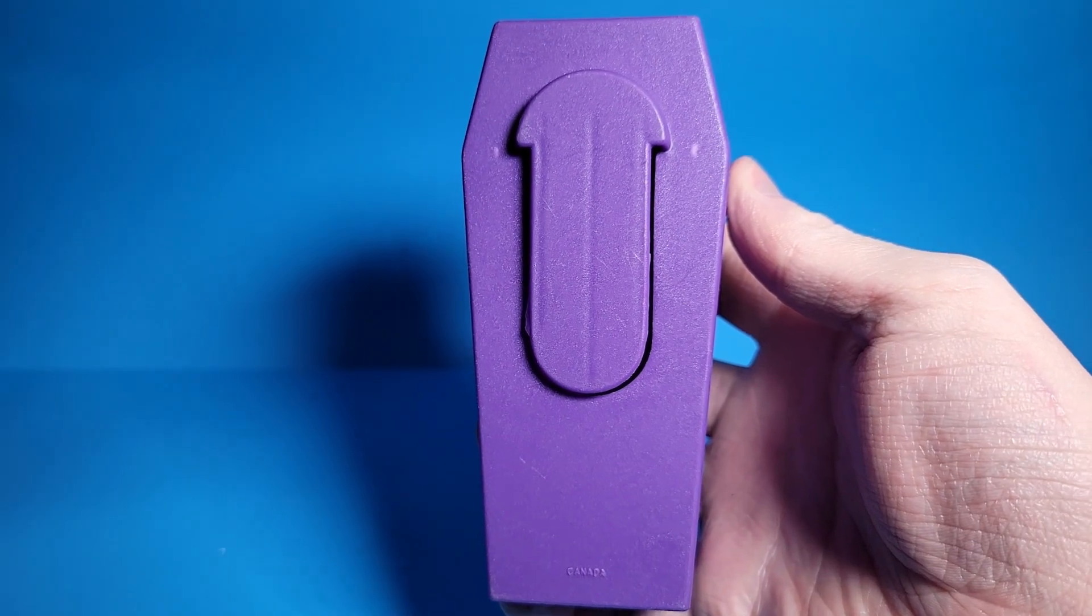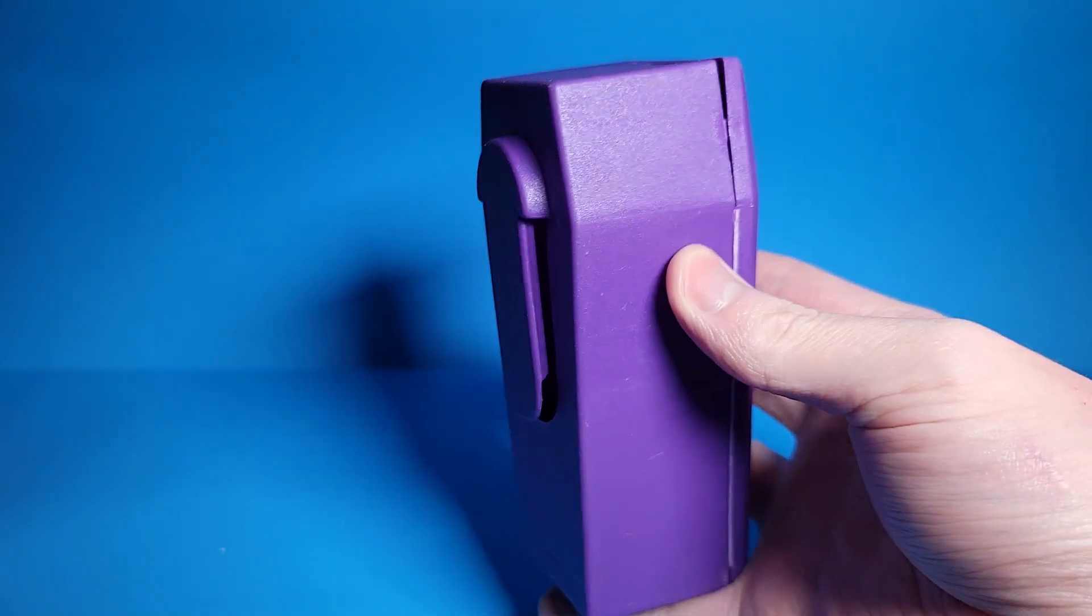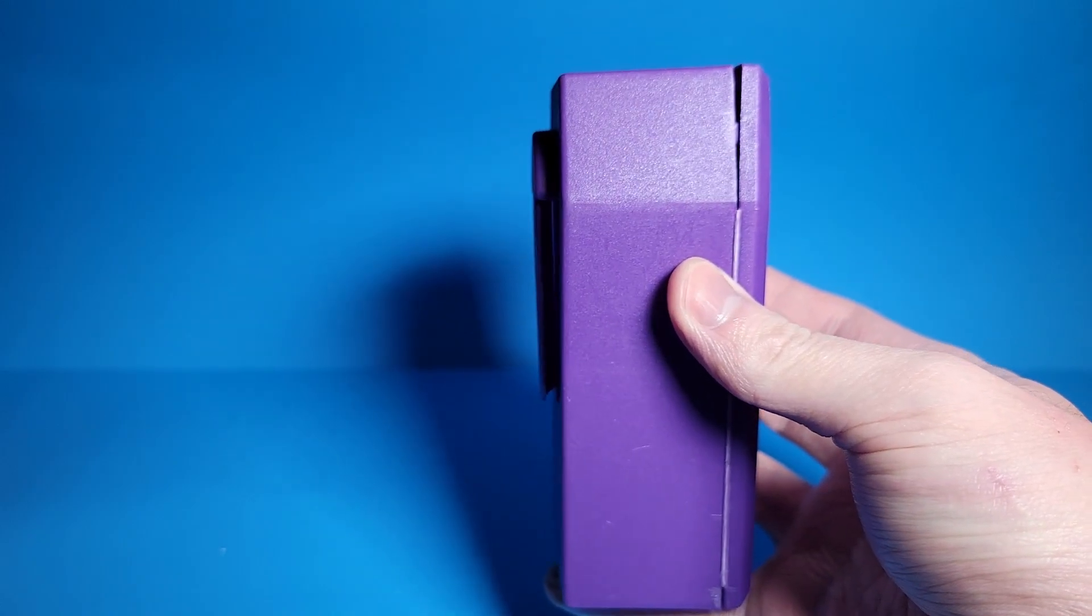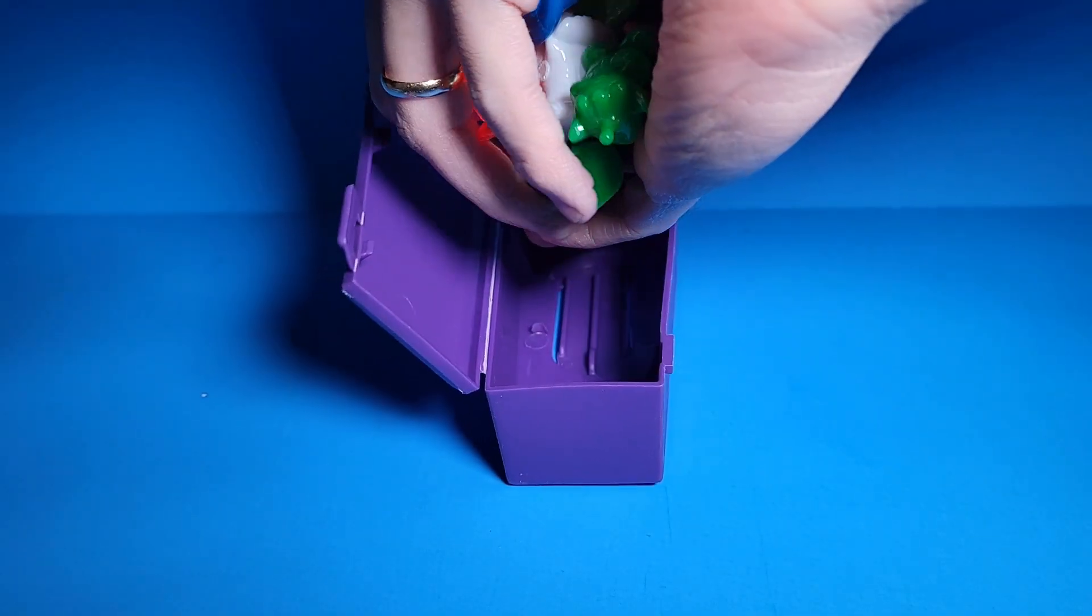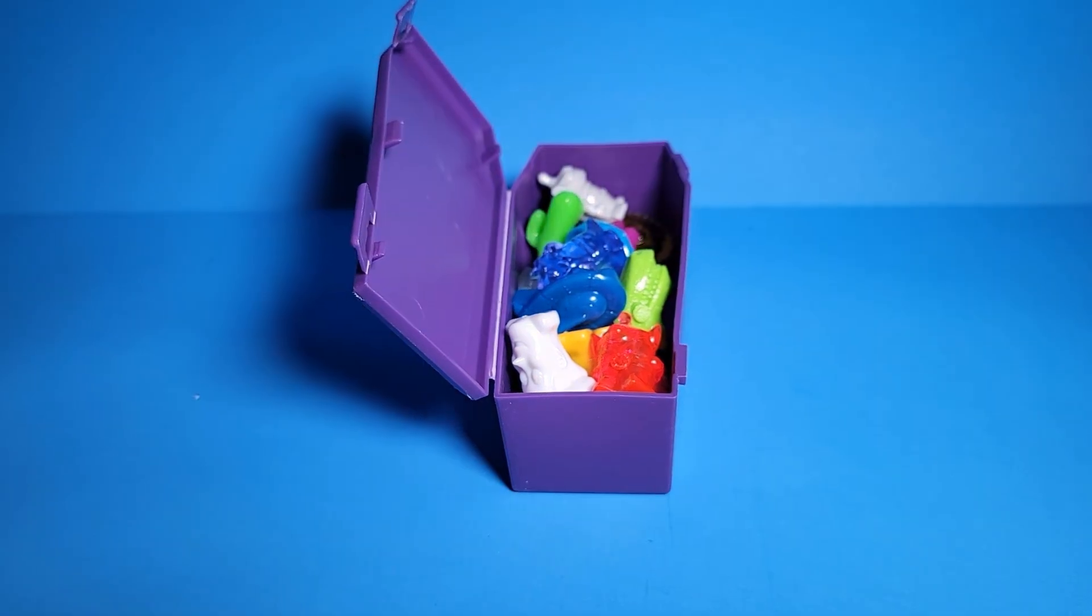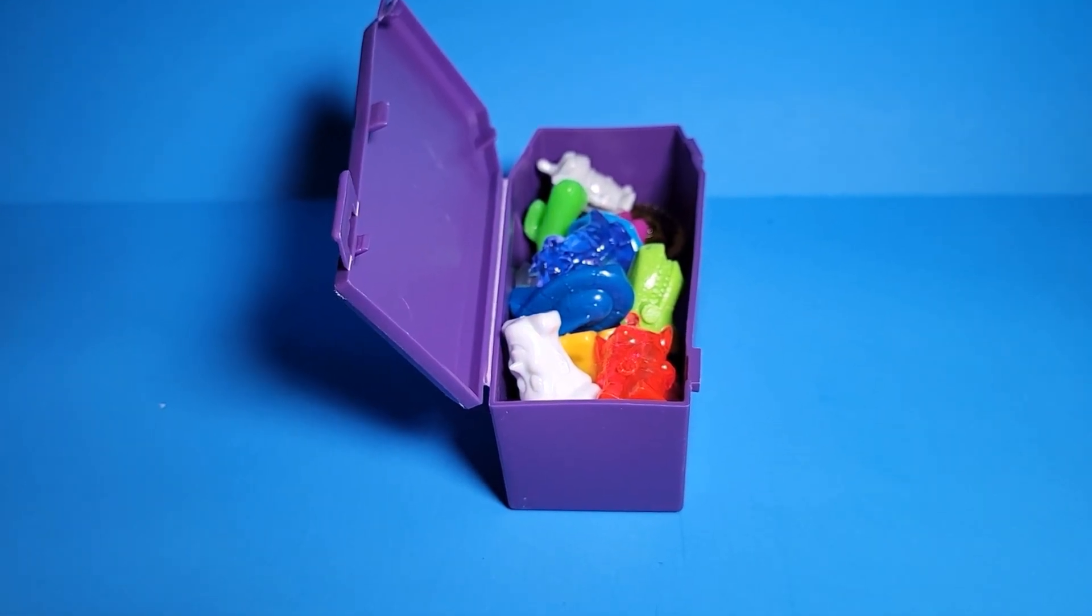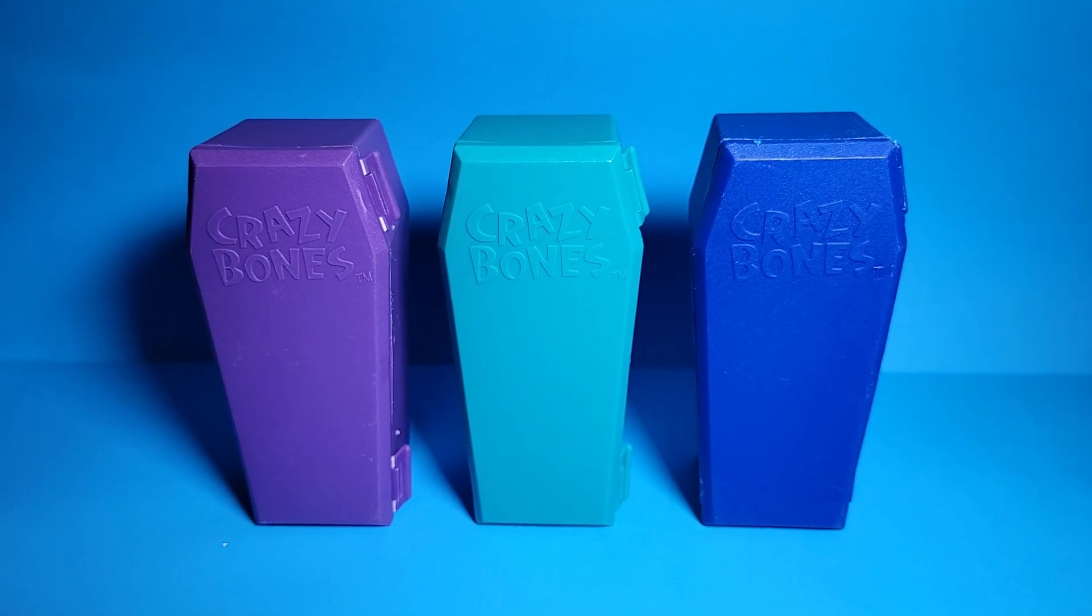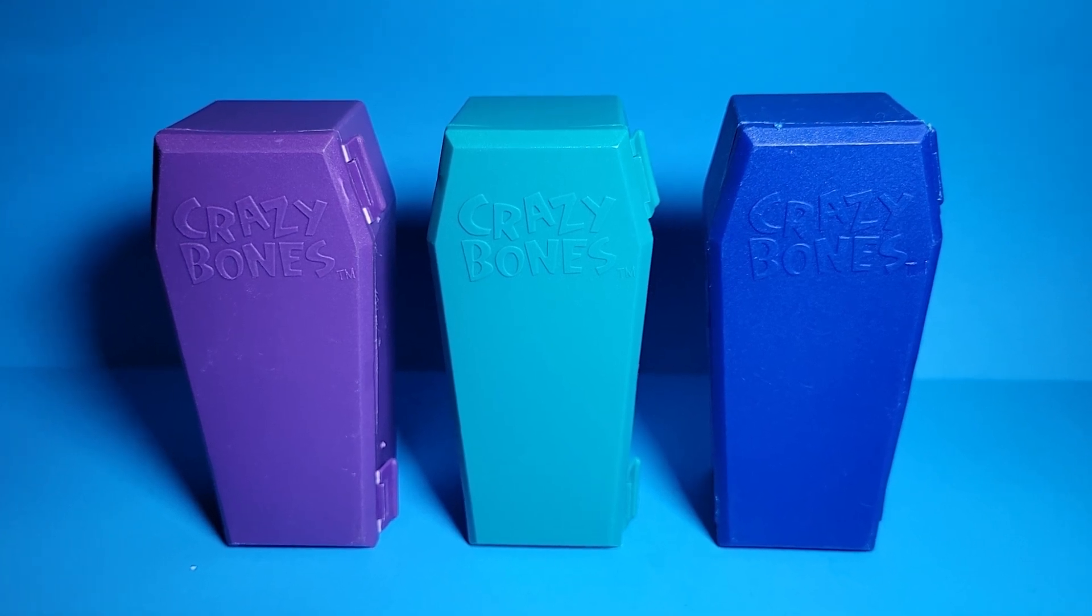The back side has a clip that can slide onto a belt loop or hang on the outside of a pocket. I was able to fit all 20 bones from this set into one coffin. There looks like there is space for a couple more as well. The coffins come in many fun colors that evoke the 90s.